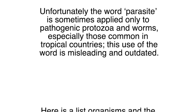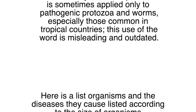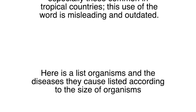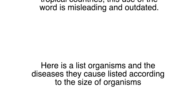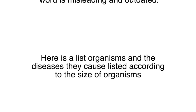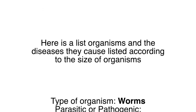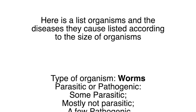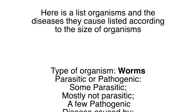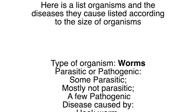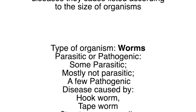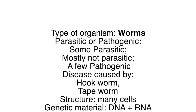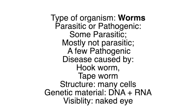Here is a list of organisms and the diseases they cause, listed according to the size of organisms. Type of organism: worms — some parasitic, mostly not parasitic. A few cause disease, like hookworm and tapeworm.